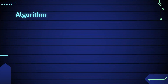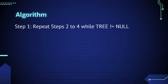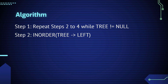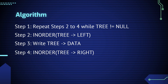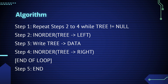Algorithm for in-order traversal: Step 1 - Repeat steps 2 to 4 while tree is not equal to null. Step 2 - In-order tree left. Step 3 - Write tree data. Step 4 - In-order tree right. End of loop. Step 5 - End.